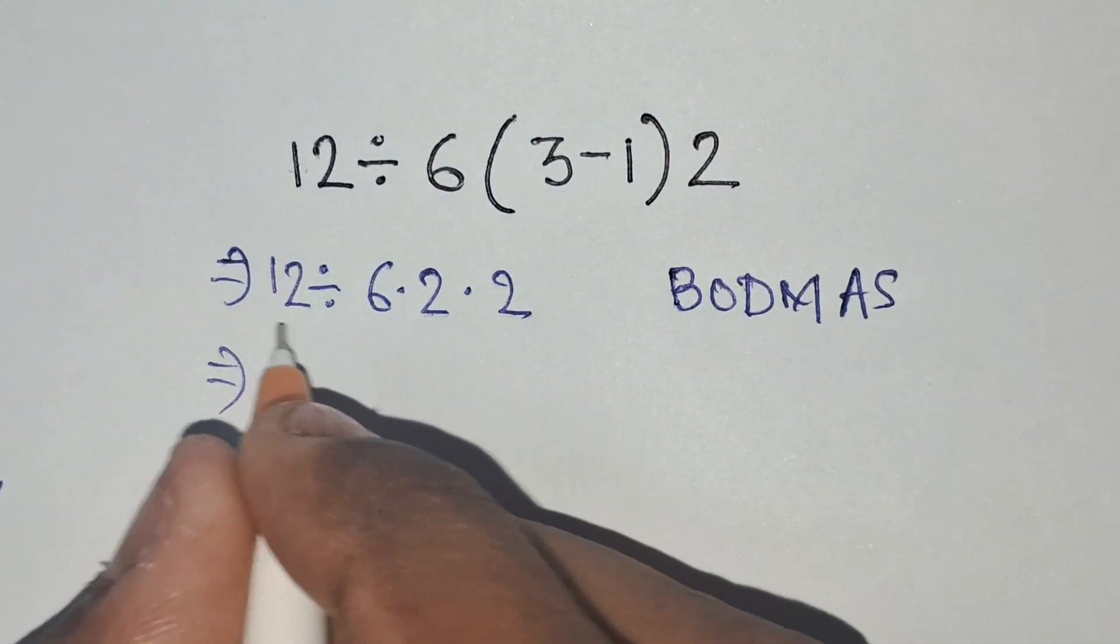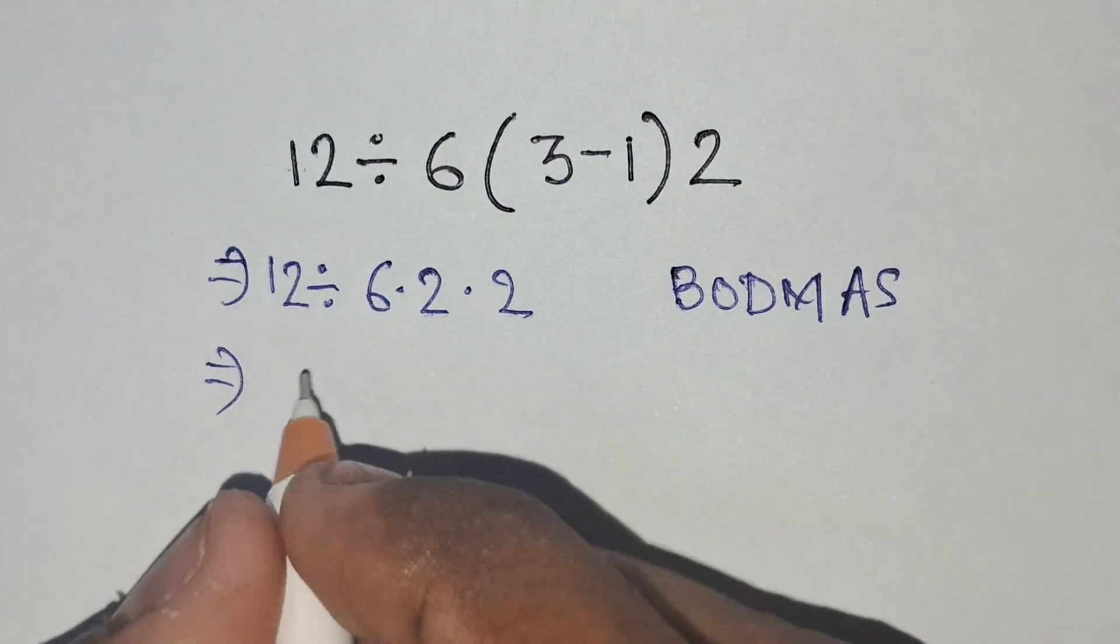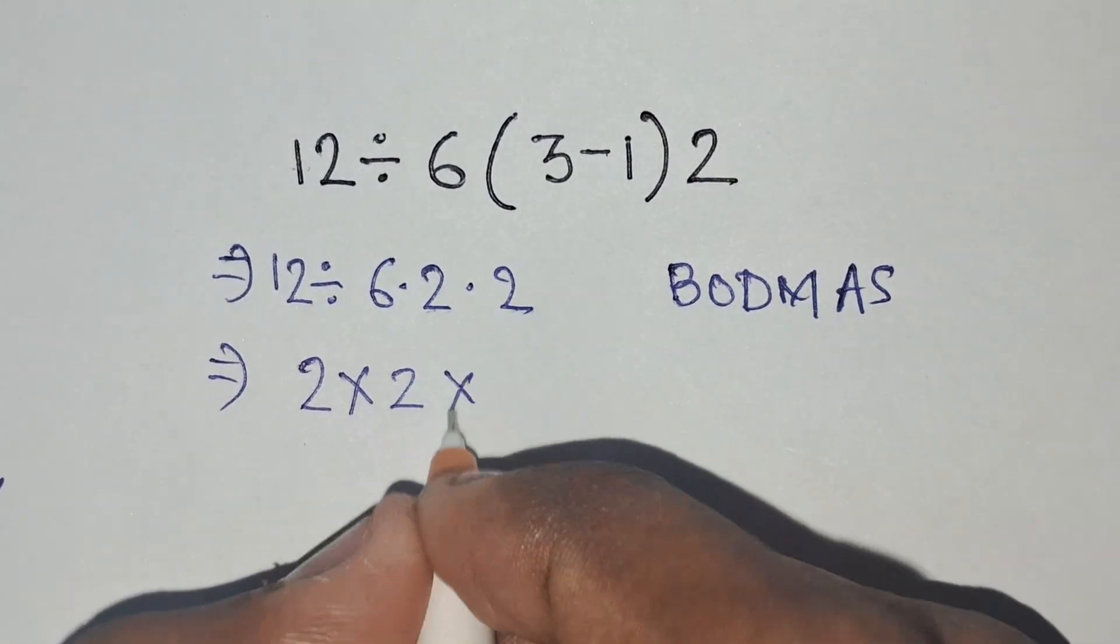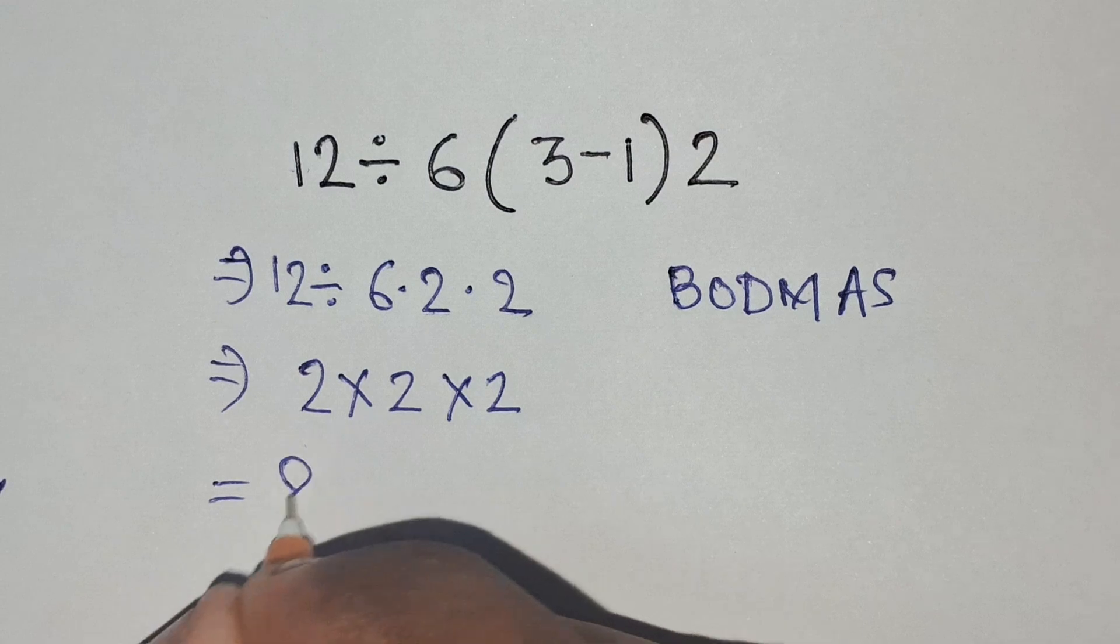Then, we have to solve the division: 12 divided by 6 equals 2, times 2 times 2. So, the final answer is 8.